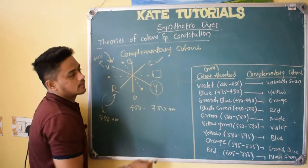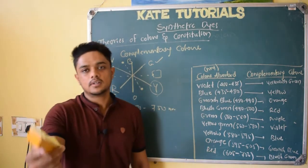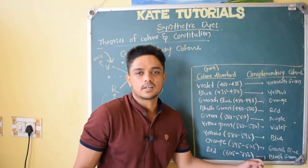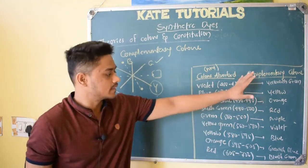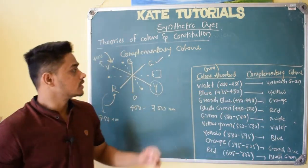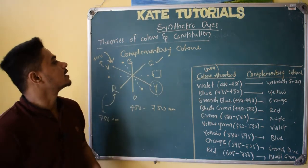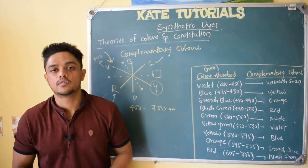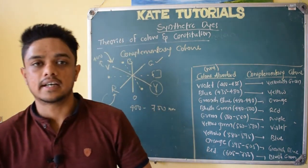You may ask: in some books it is given as 800 nanometer — then refer that book also, no problem. There will be little confusion in giving the exact number. So these are the complementary colors. This is about the complementary theory of color and constitution. In the next class, let us see one more beautiful theory. We shall meet in next class. Till then, take care.